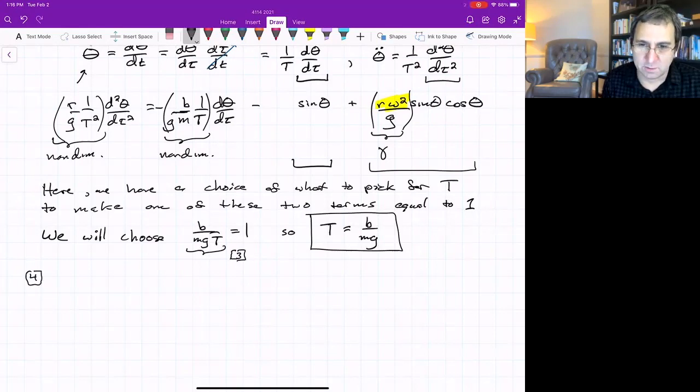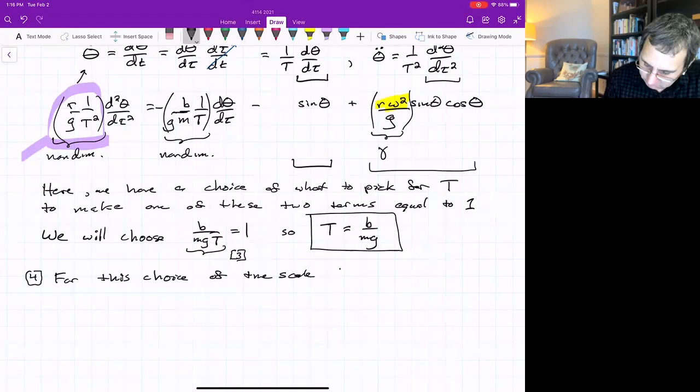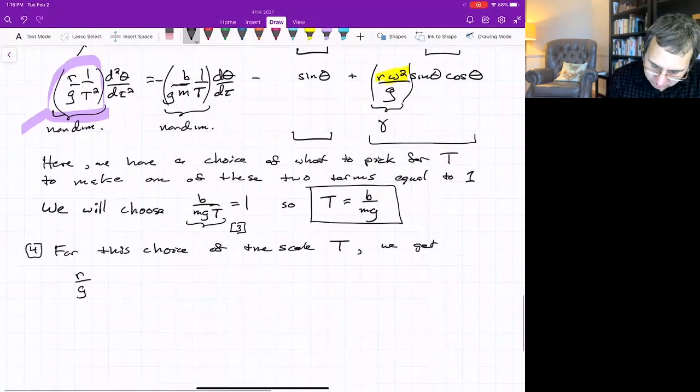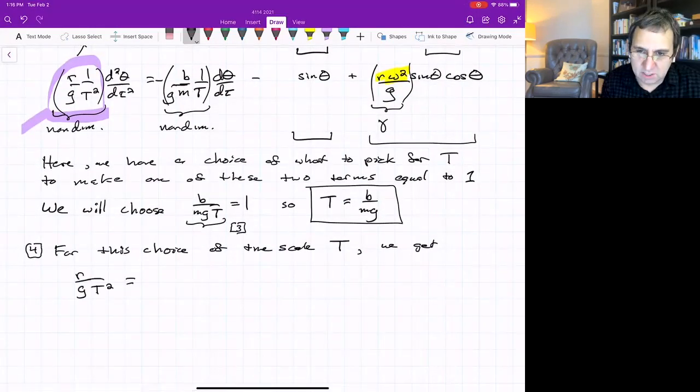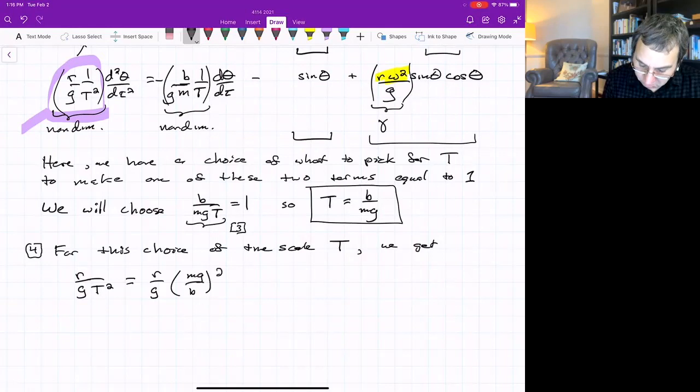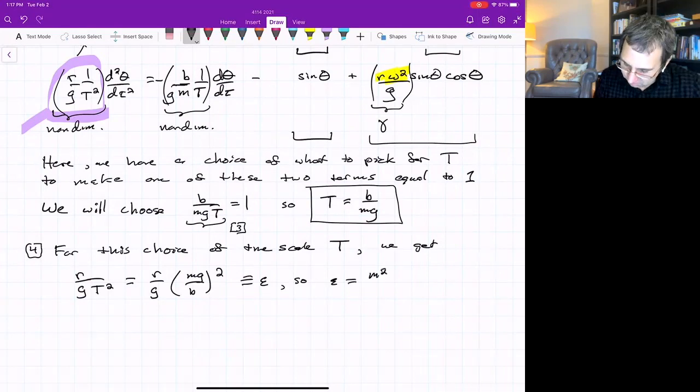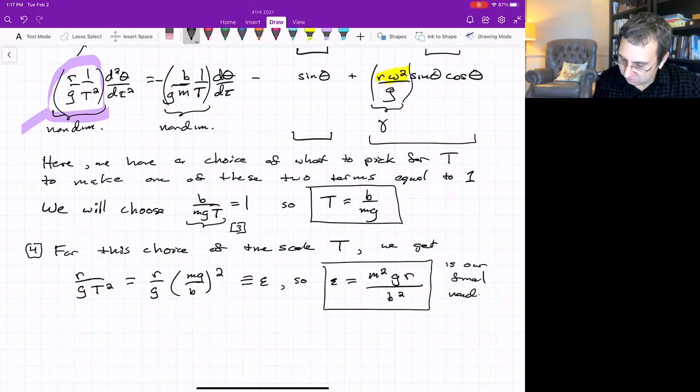The last one just sort of given to us by this first term here in purple. Because for that choice of T, what does that become? Let's scale T. We get r over g T squared. This ends up being r over g times mg over b squared. It's got to be non-dimensional, and it is. We'll call it epsilon. So epsilon is m squared g r over b squared. So this is our fourth and final non-dimensional number.